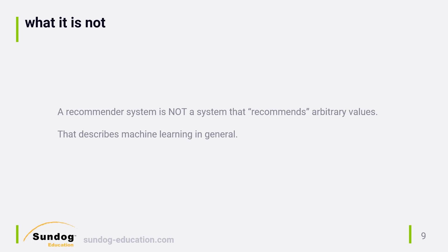A recommender system is not a system that just recommends arbitrary values for some arbitrary problem. That's not what it's all about, so don't read too much into the name. A recommender system is a very specific kind of machine learning system. Systems that just recommend values for arbitrary problems — that describes machine learning in general. That's not really a recommender system per se, so the terminology can be a little bit confusing.